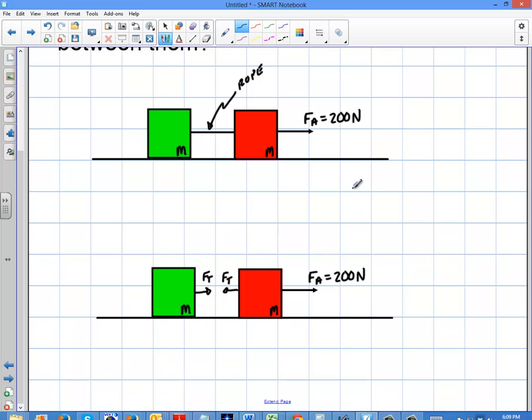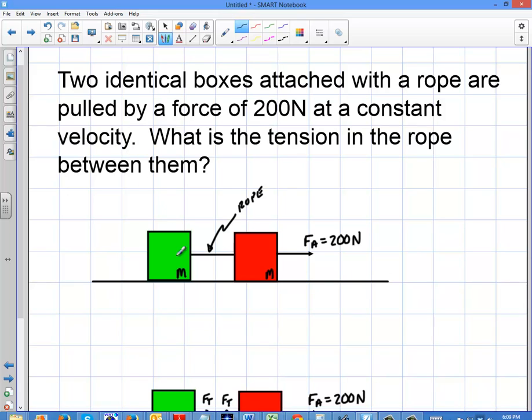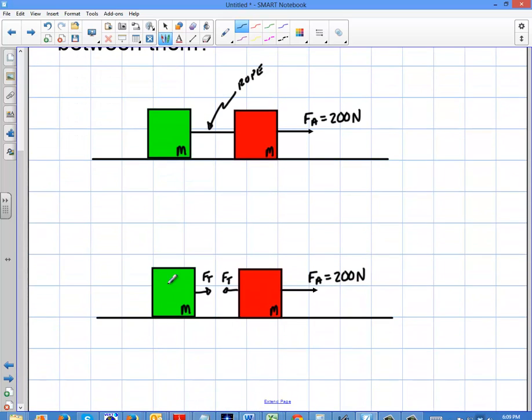Now one of the key things about this problem is it said the force applied is 200 newtons, but it's moving at a constant velocity. So if this was on a slick surface or there was no friction, that would be accelerating, right? That would be getting faster and faster, but it's not. It's moving at a constant velocity.